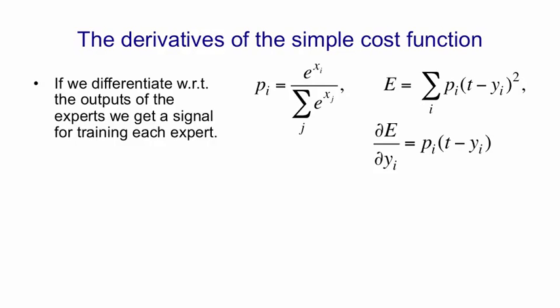If we look at the derivatives of that error function, the outputs of the manager are determined by the inputs, xi, to the softmax group in the final layer of the manager. And then the error is determined by the outputs of the experts and also the probabilities output by the manager. If we differentiate that error with respect to the outputs of an expert, we get a signal for training that expert. And that gradient that we get with respect to the output of an expert is just the probability of picking that expert times the difference between what that expert says and the target. So if the manager decides that there's a very low probability of picking that expert for that particular training case, the expert will get a very small gradient and the parameters inside that expert won't get disturbed by that training case. It'll be able to save its parameters for modeling the training cases where the manager gives it a big probability.